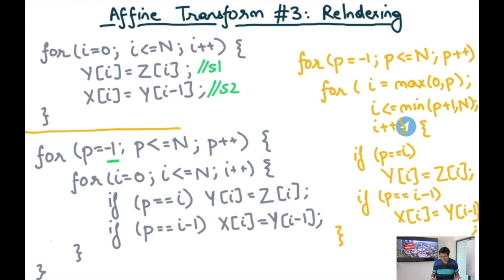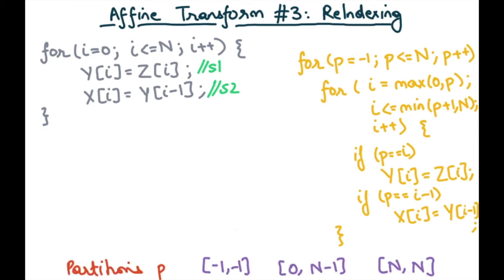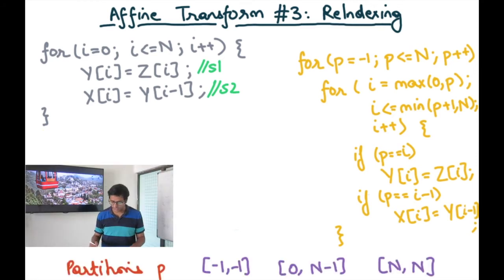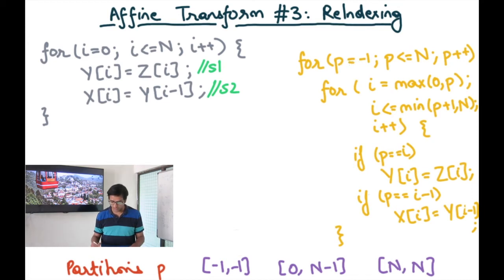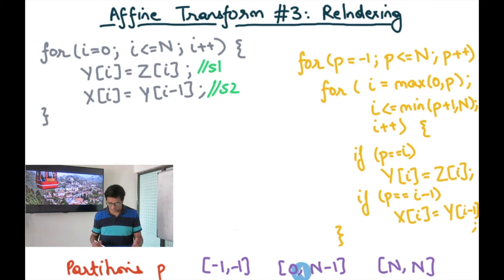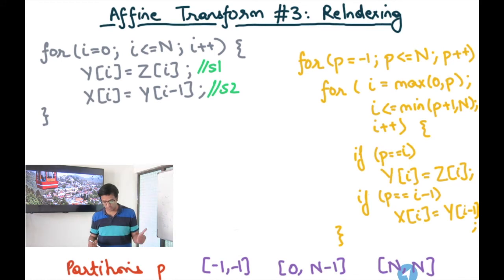We can eliminate these extra tests by specializing the code, potentially duplicating the statements. I partition the iteration space of the outermost loop on p into three different partitions. One is the singleton point minus 1, for which only S2 would execute. Then we have the range from 0 to n minus 1, where both S1 and S2 would execute. And then I have the singleton point n, for which only S1 executes.